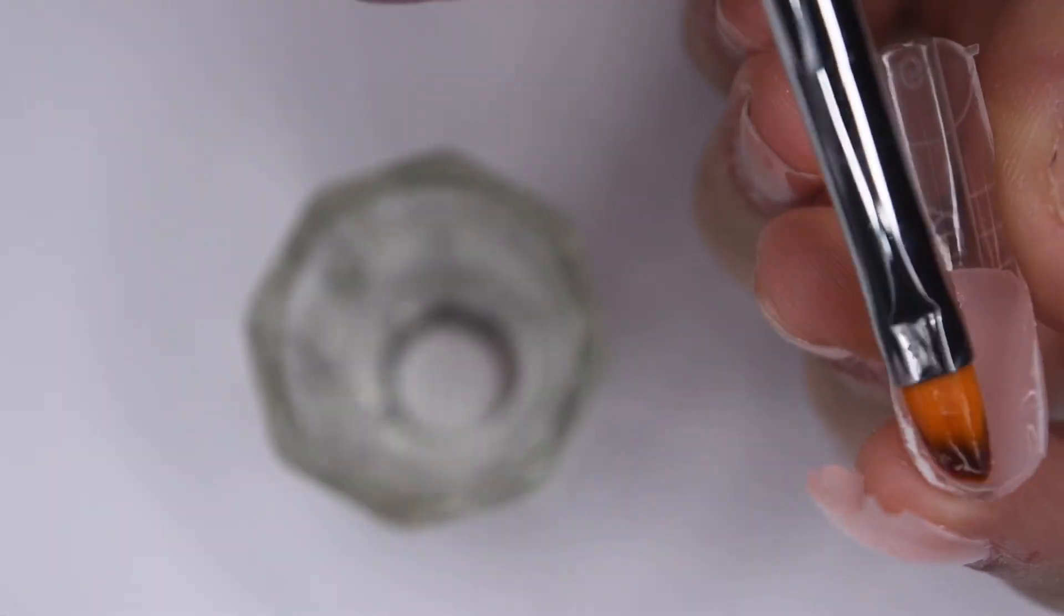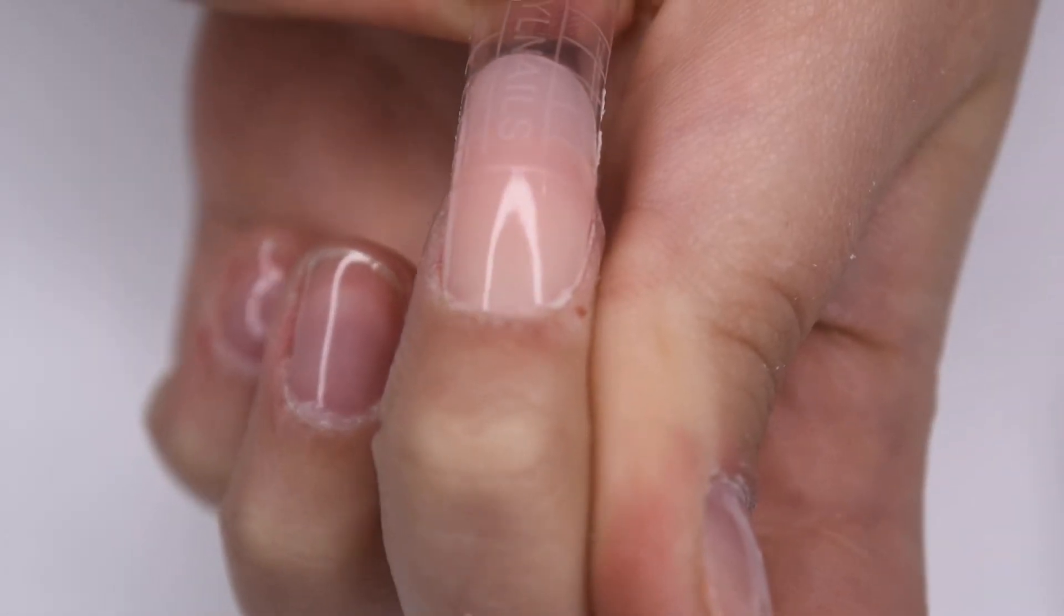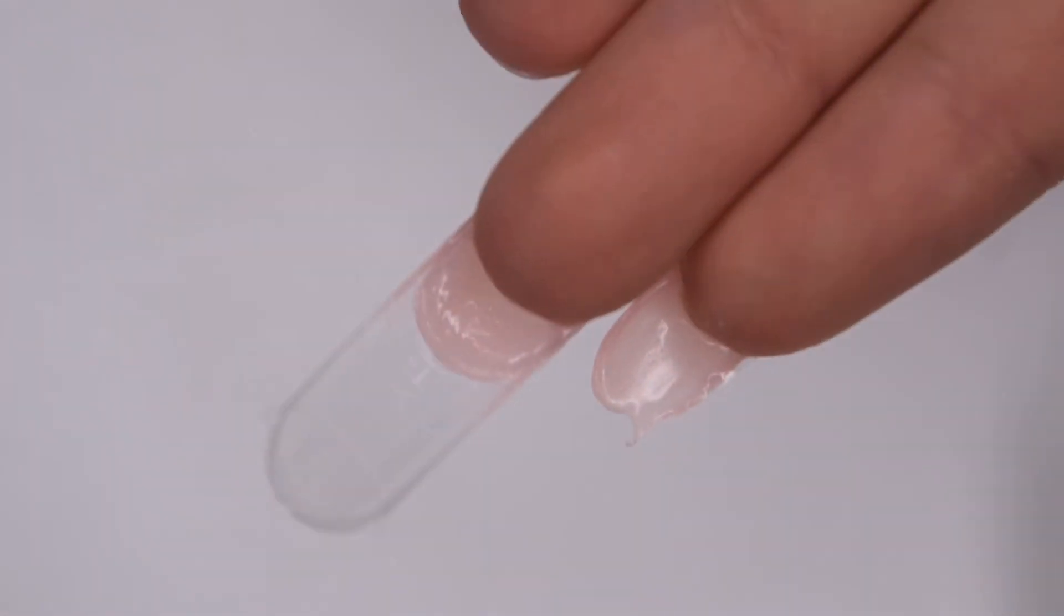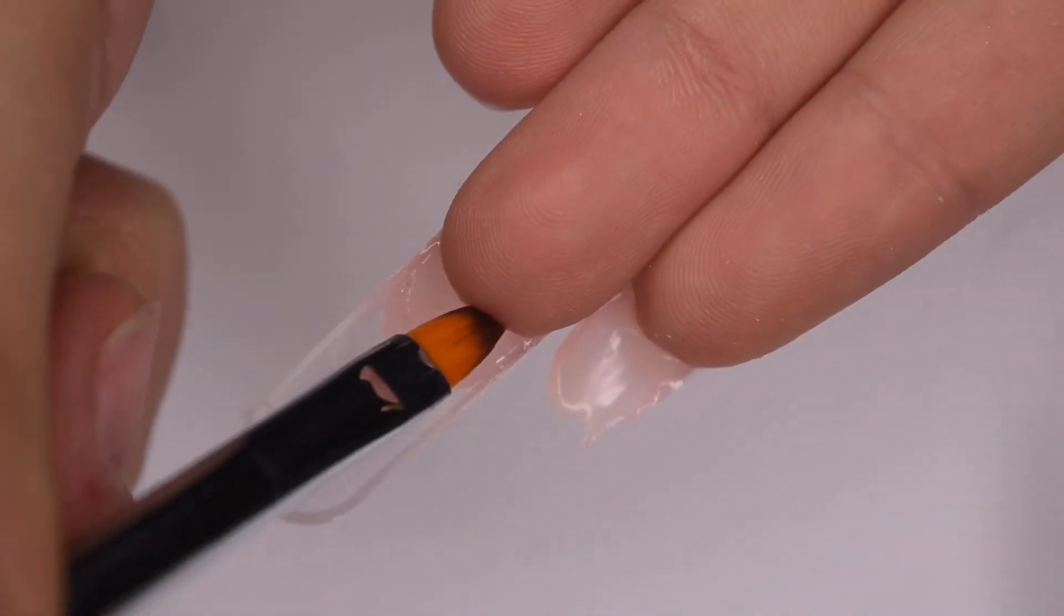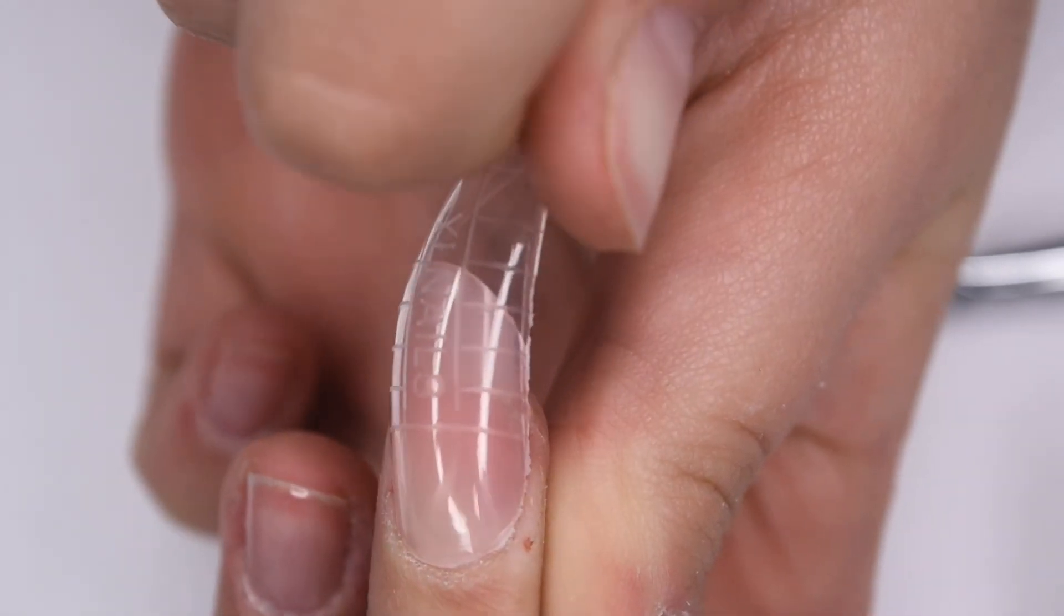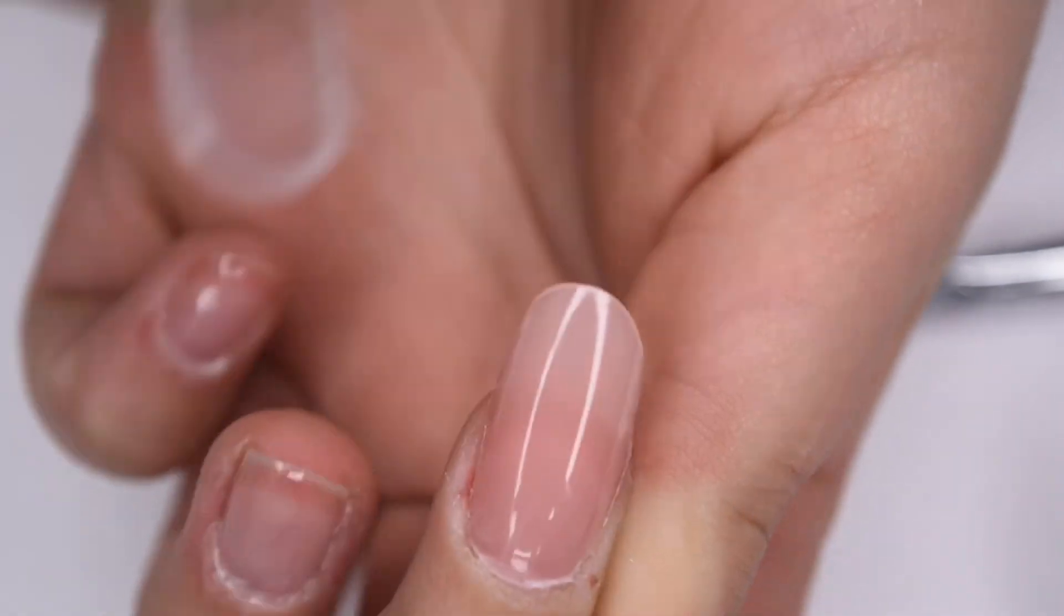And then after I'm happy with the application in the dual form, I'm starting at the cuticle area and pressing down towards the tip to get away any air bubbles. And I took some more of the slip solution and the brush, and I'm going to smooth out the underside of the nail to make it flush with my natural nail, as well as to have a nice smooth surface. And then I cured for 30 seconds in my LED lamp, and I'm going to pop off the dual form again to reveal a nice and smooth, beautiful nail.